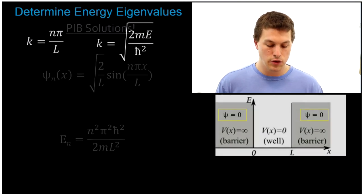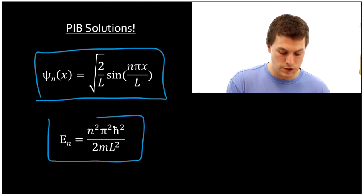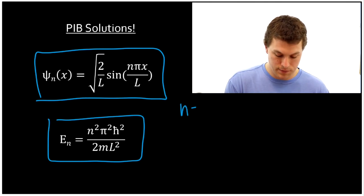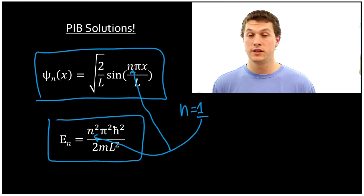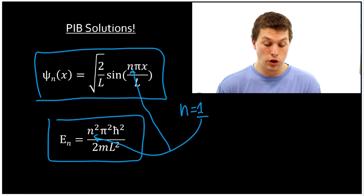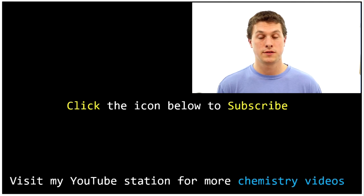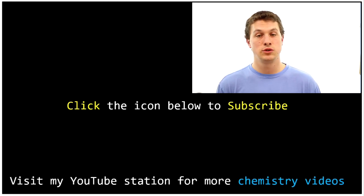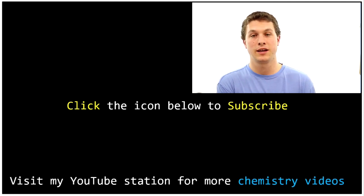That is the energy associated with each wave function — we've solved for both the energy eigenvalues and the wave functions. These are the particle-in-a-box solutions: an infinite number of wave functions and a corresponding infinite number of energy eigenvalues. For n = 1, you get the lowest energy wave function and its energy eigenvalue. Check out my other videos for more on particle in the box, and thanks as always for watching Real Chemistry.